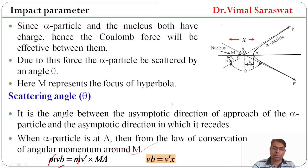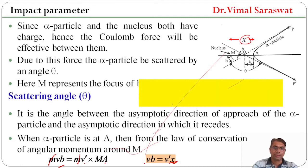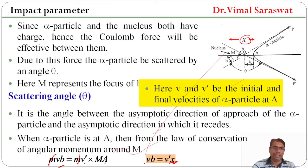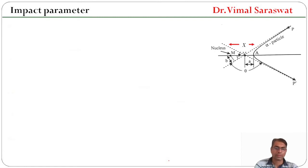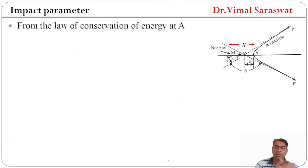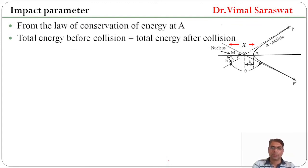So Vb = V'·X, where V and V' are the initial and final velocities of the alpha particle at A. From the law of conservation of energy at A, the total energy before collision equals the total energy after collision.